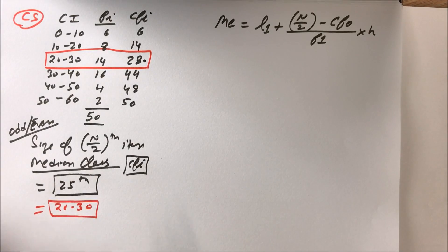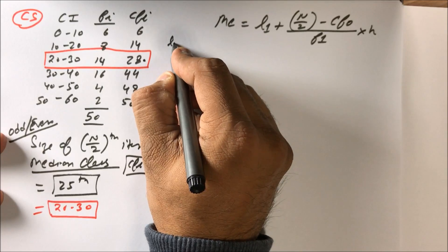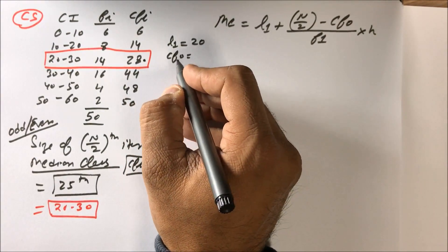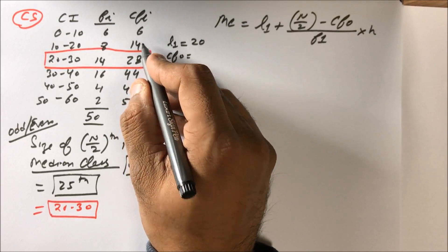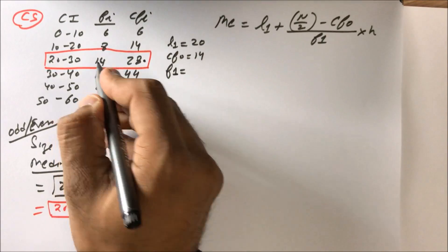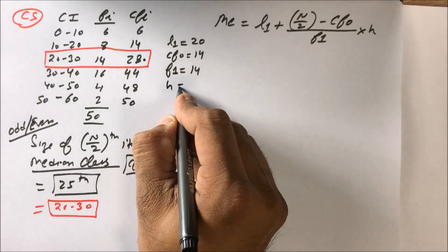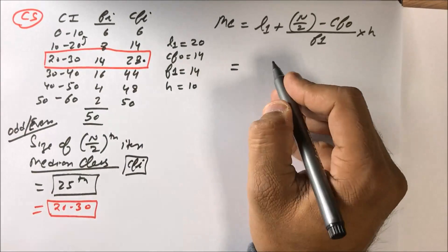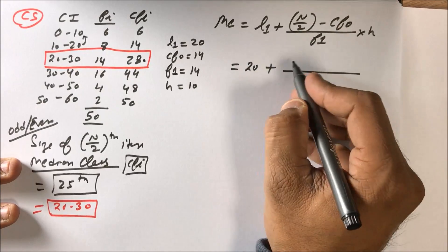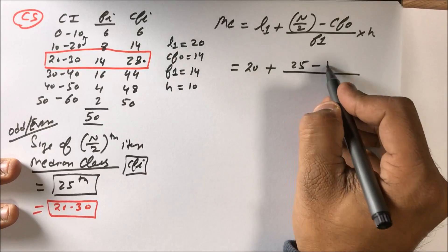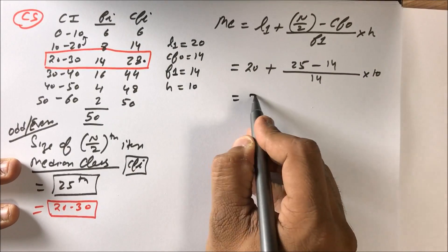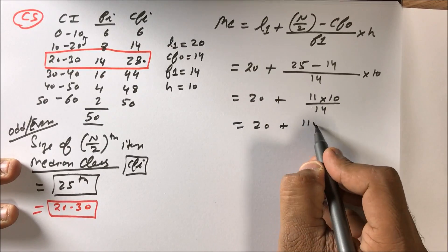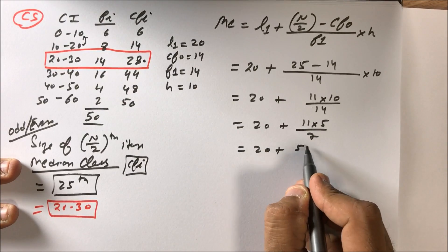For the median class 20–30: L1 = 20, CF0 (cumulative frequency preceding the median class) = 14, f1 (frequency of the median class) = 14, and h (class size) = 10. Substituting: 20 + [(25 − 14) / 14] × 10 = 20 + [11/14] × 10 = 20 + 110/14 = 20 + 55/7.